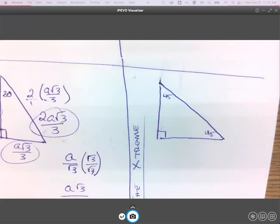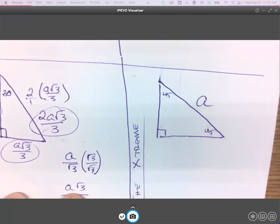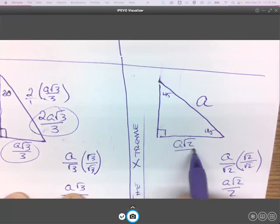And then the extreme version says, okay, but what if this were the side that were given to you? Well, that would mean that to get back to here, I'd have to divide by root 2. So A divided by root 2, which again gets rationalized to be A root 2 over 2. So these sides would be A root 2 over 2.